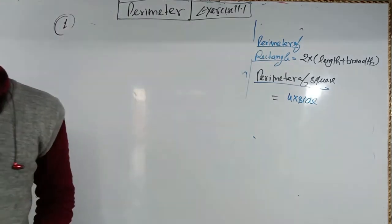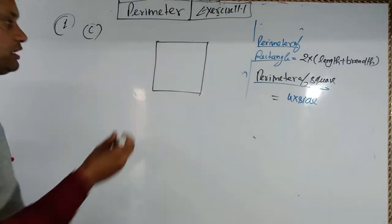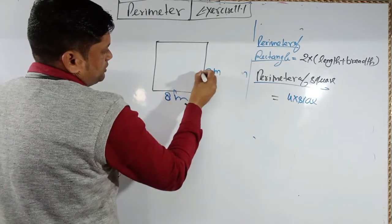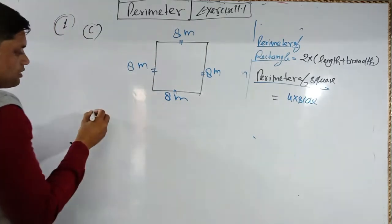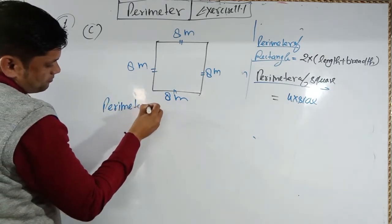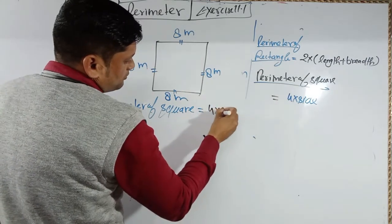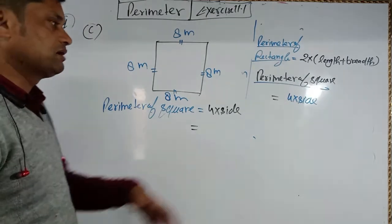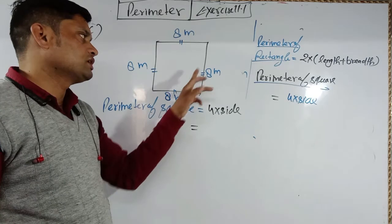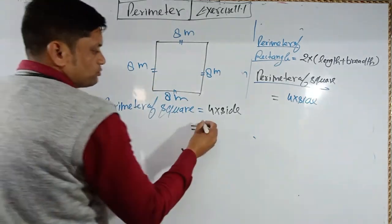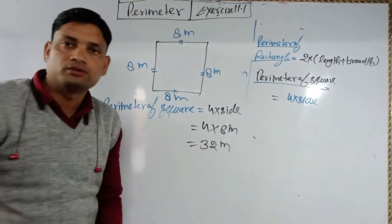Question 1c is a square shape with side = 8 meters. All sides are equal in a square. Perimeter of square = 4 × side = 4 × 8 = 32 meters. That is your answer — easy!